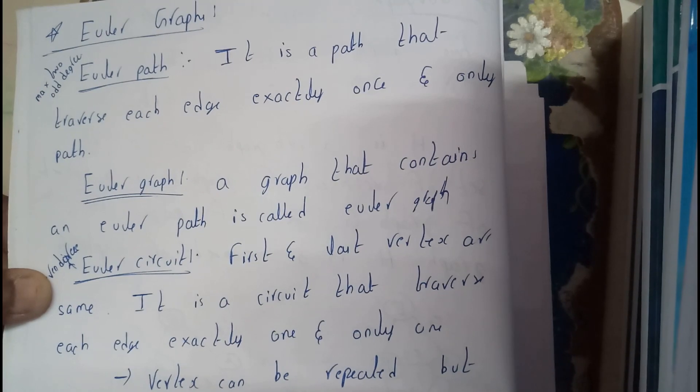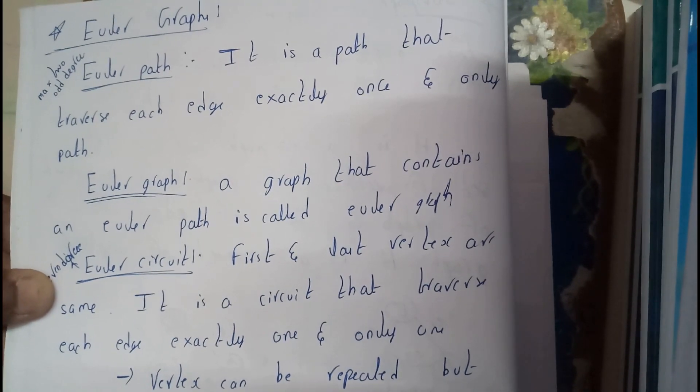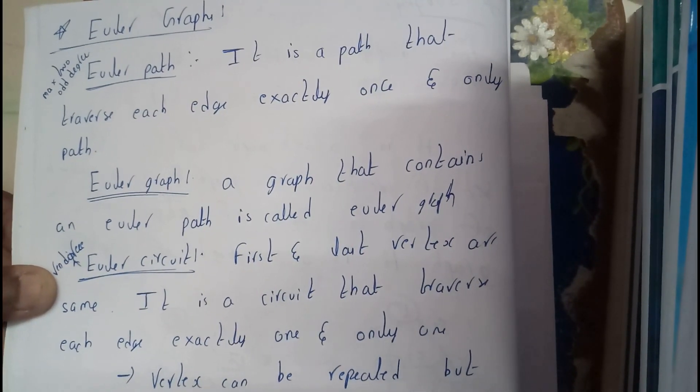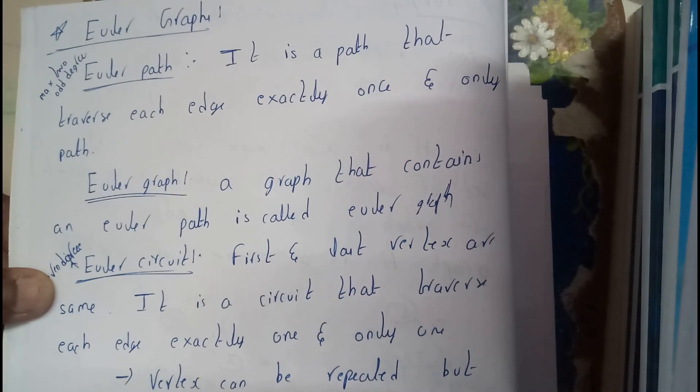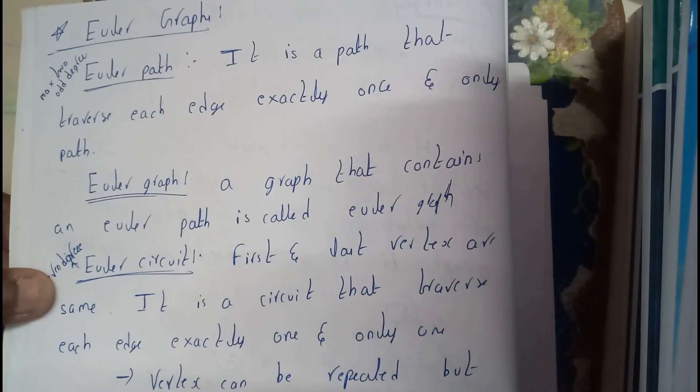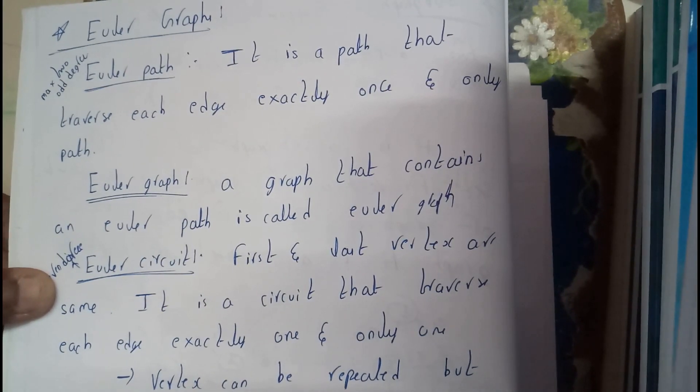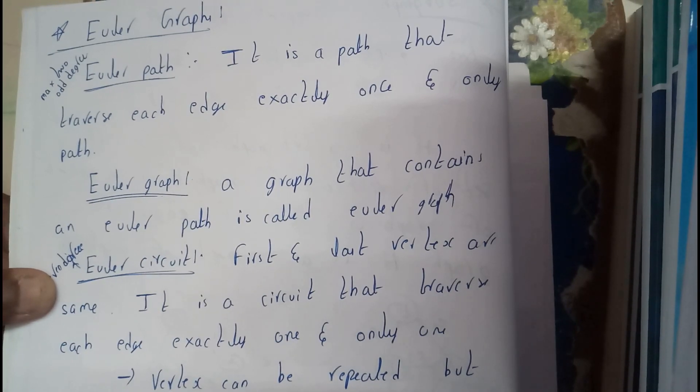I think everyone is clear with all the three definitions that we have just gone through. From each edge we should traverse exactly once, and every graph which has an Euler path is an Euler graph. And if the initial and final positions are same, then it is an Euler circuit.